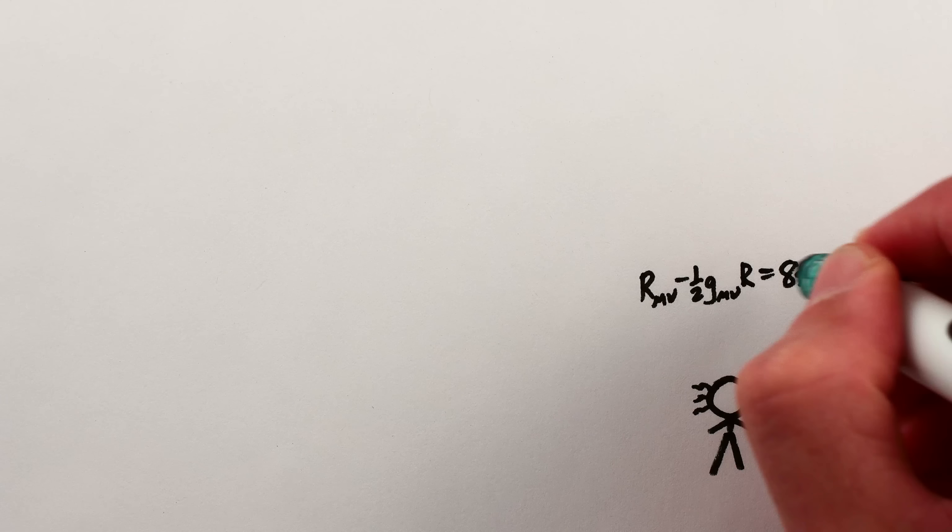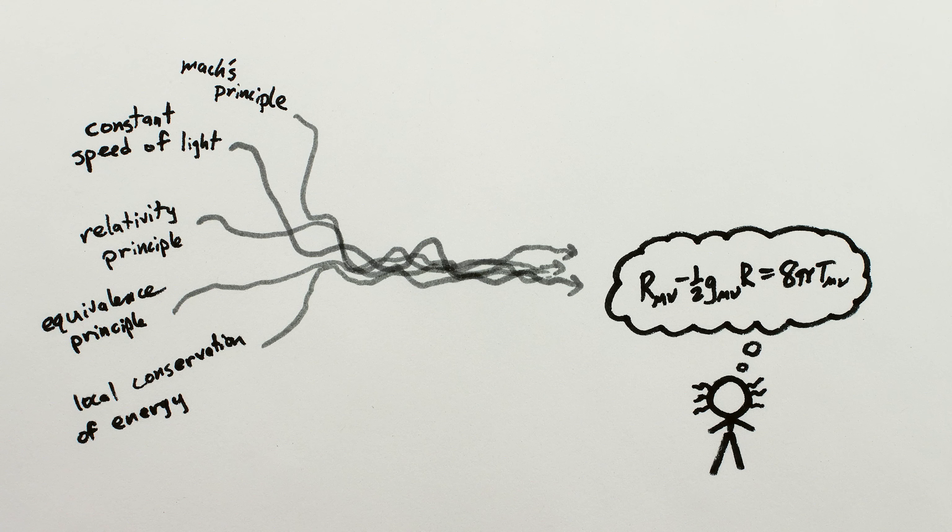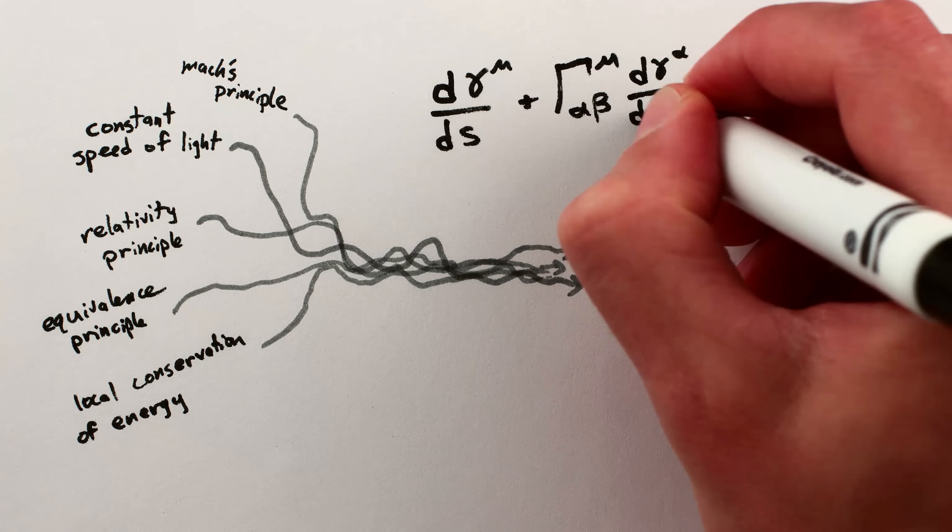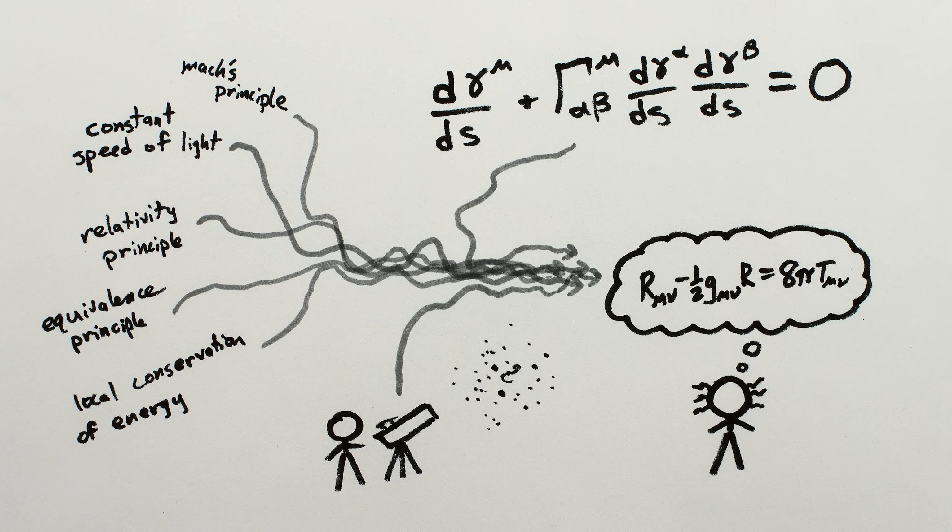And Einstein didn't just pull this equation out of thin air. It was the natural consequence of a long and careful consideration of key principles of physics, combined with the advanced mathematics of curved surfaces, and of course, agreement with the experimental observations of the day.